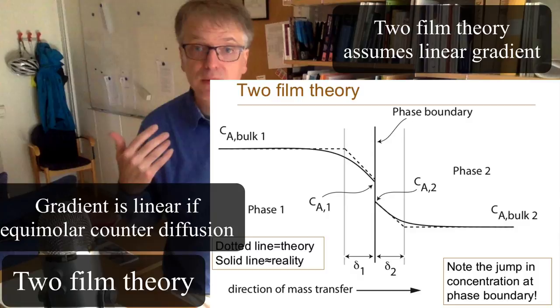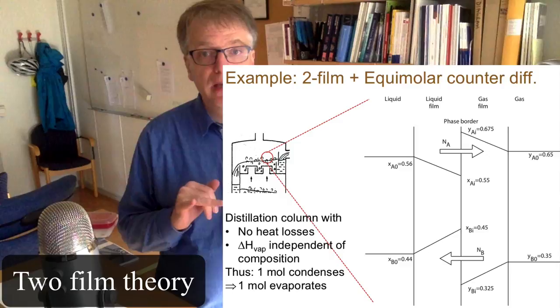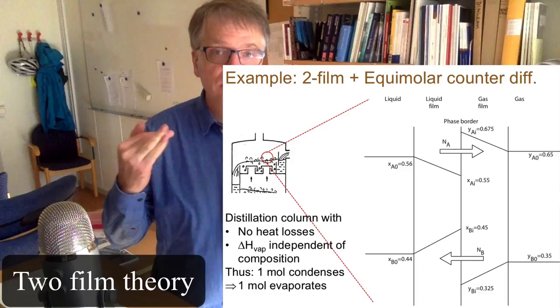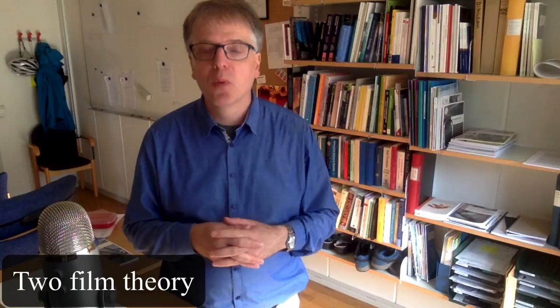We will talk about distillation later, and there you can have equimolar counter diffusion. If you have distillation of a binary system — a system with two components — with no heat losses and an evaporation alpha that is independent of the composition, you can get equimolar counter diffusion. We will explain why that is so when we discuss distillation.